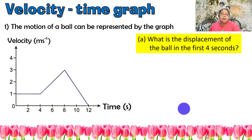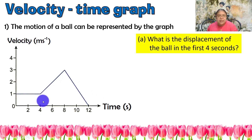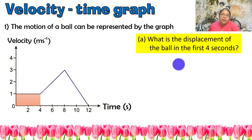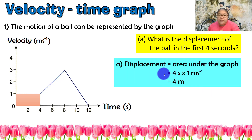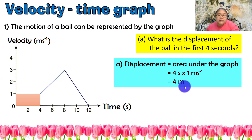Now a VT graph showing the motion of a ball. The y-axis is velocity and the x-axis is time. Question one: what is the displacement of the ball in the first 4 seconds? Since this is a VT graph, displacement equals the area under the graph. The area for 4 seconds at a velocity of 1 m/s is 4 times 1, giving a displacement of 4 meters.